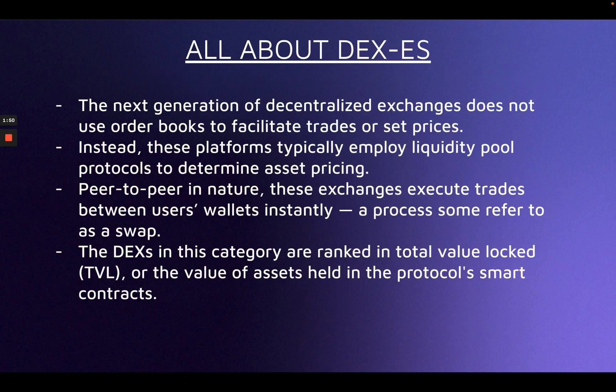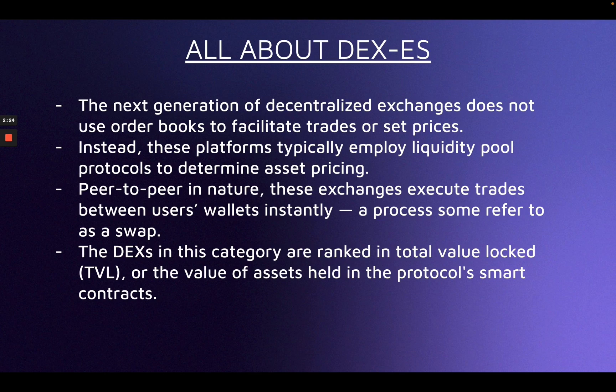Let's look at the different characteristics of DEXs. The next generation of DEXs does not use order books to facilitate trades or set prices. DEXs are short for decentralized exchanges — you will come across this word a lot. What happens in a DEX is that there is a liquidity pool created to determine the asset pricing. There is a model behind this liquidity pool creation called AMM, or automated market making, about which you can also read in the lesson.